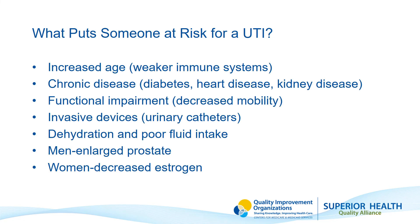The following put people at higher risk for UTIs: increased age due to weaker immune systems; chronic diseases such as diabetes, heart disease, or kidney disease; functional impairment or decreased mobility; invasive devices such as urinary catheters; dehydration and poor fluid intake; men with an enlarged prostate; and women with decreased estrogen. Many of these factors are present for people living in nursing homes or assisted living facilities, so it is no surprise that people in these settings often get a urinary tract infection.